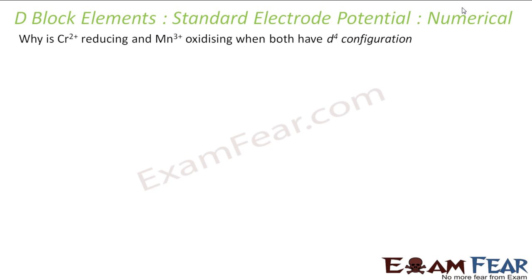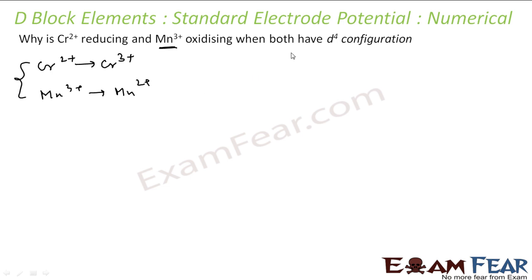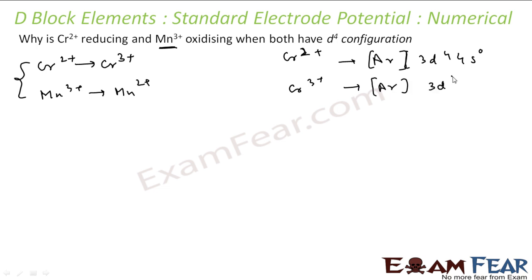A numerical example: chromium is a reducing agent, meaning chromium gets oxidized, while Mn³⁺ is an oxidizing agent, meaning Mn³⁺ gets reduced. The question is why this happens. Chromium 2+ has the electronic configuration Ar 3d⁴ 4s⁰, and chromium 3+ has the configuration Ar 3d³ 4s⁰. For Mn, Mn³⁺ has configuration 3d⁴ 4s⁰.